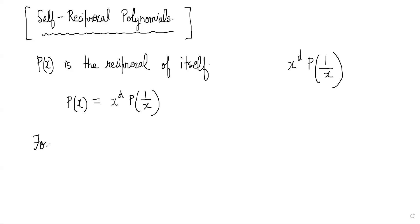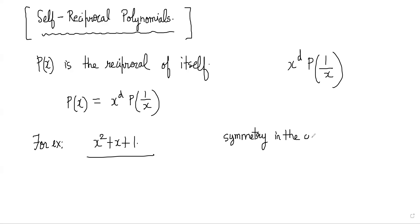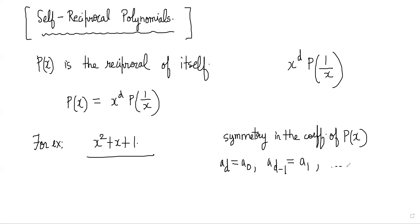An example of this kind of polynomial is x² + x + 1 — that is a self-reciprocal polynomial. From the definition, it should be immediately obvious that these are polynomials where there is a symmetry in the coefficients of P(x), such that a_d = a_0, a_{d-1} = a_1, and so on. Here d is the largest degree and a_0 is the constant term. You can see that 1 is the coefficient of x², and 1 is the constant term.